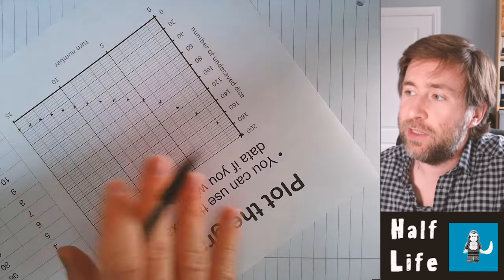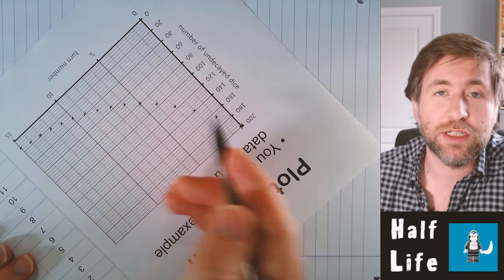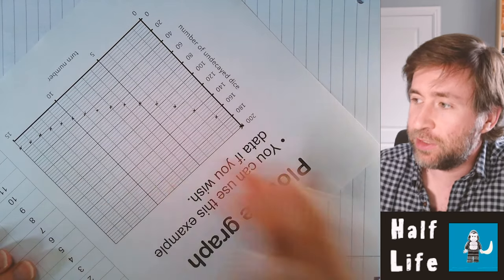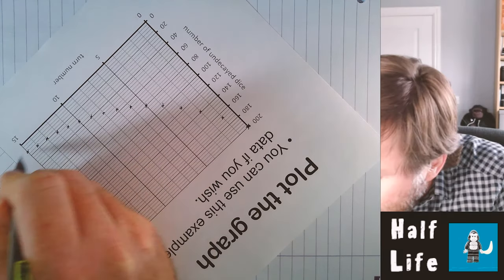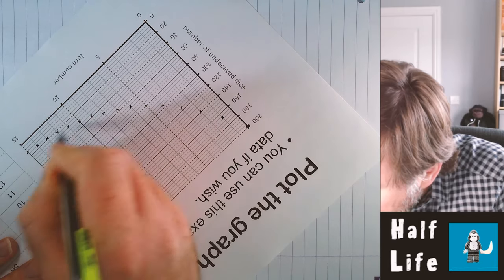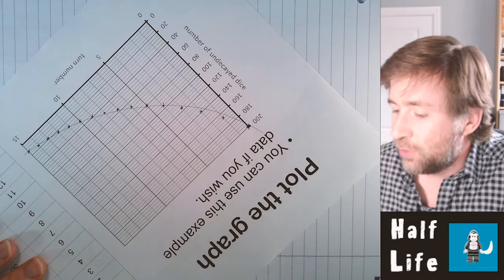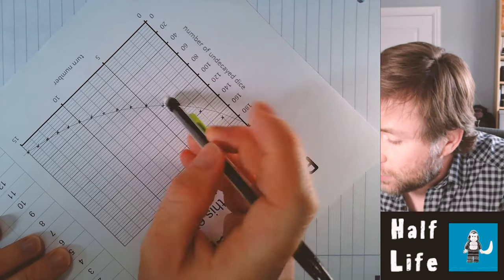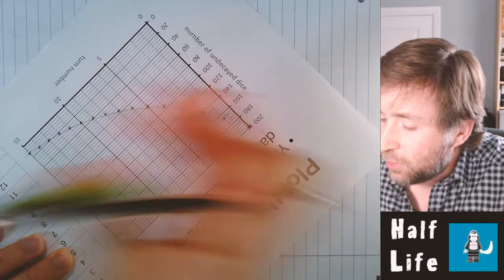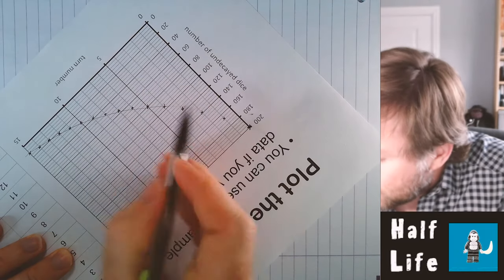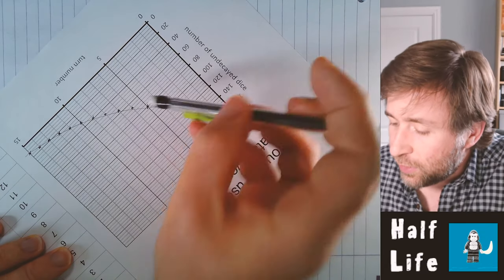Here's my pro tip for drawing curves as lines of best fit: angle your arm so it turns and twists in the same direction as the curve you're trying to draw, do a couple of practice swings, and then draw through the majority of the data. The line doesn't have to go through every single point — it's a best fit.